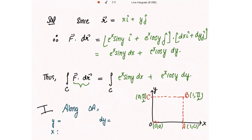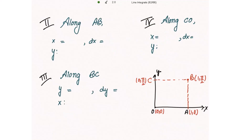We calculate the circulation along each segment and add them up. Along OA, y is 0, so dy is also 0, and x varies from 0 to 1. We compute the integral along OA, then along AB, then along BC, then along CO.